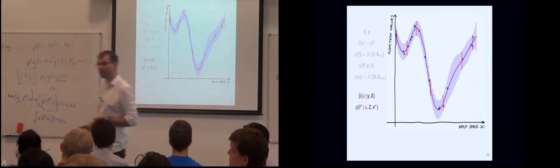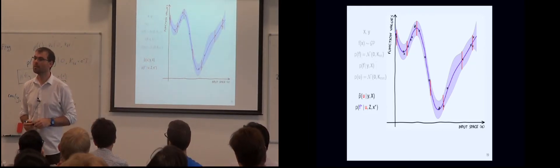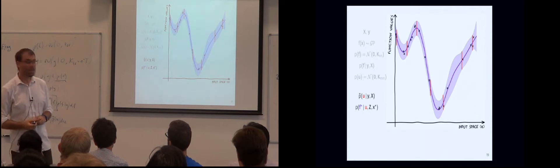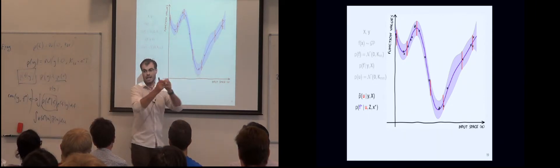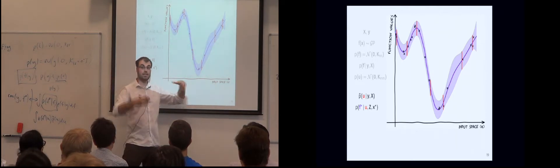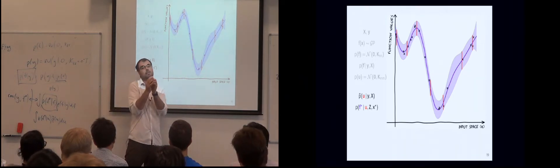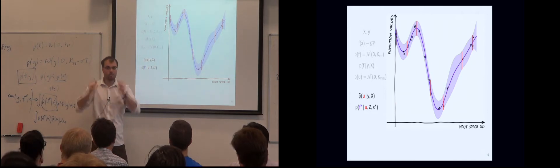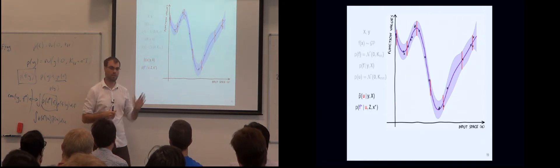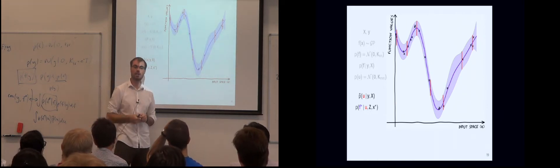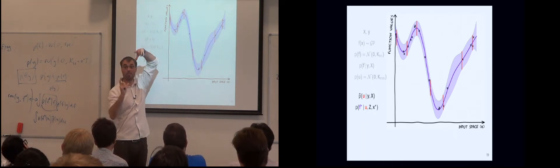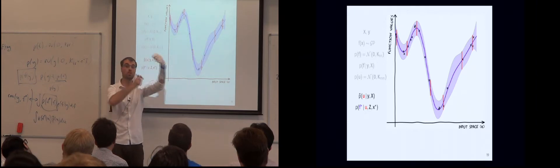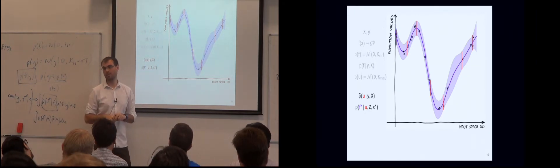Q: Can you explain what Z is? Z lives in the same space as X. X are the positions you have for the data, and Z are some extra parameters we've introduced — the positions at which we're going to summarize the GP. So if X and F are input-output pairs, then Z and U are also input-output pairs.